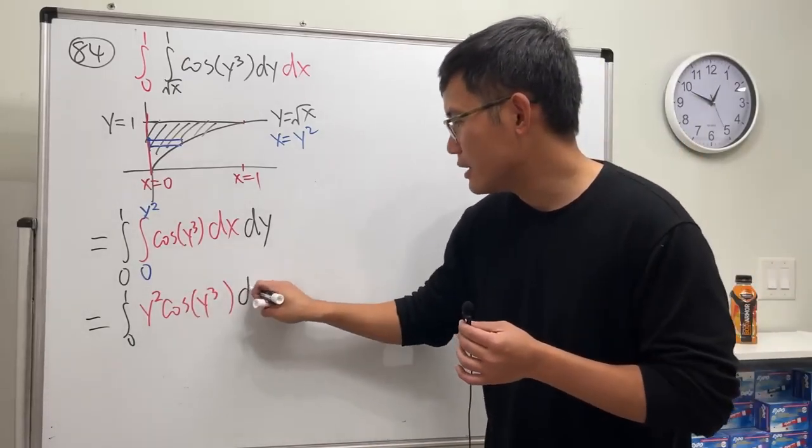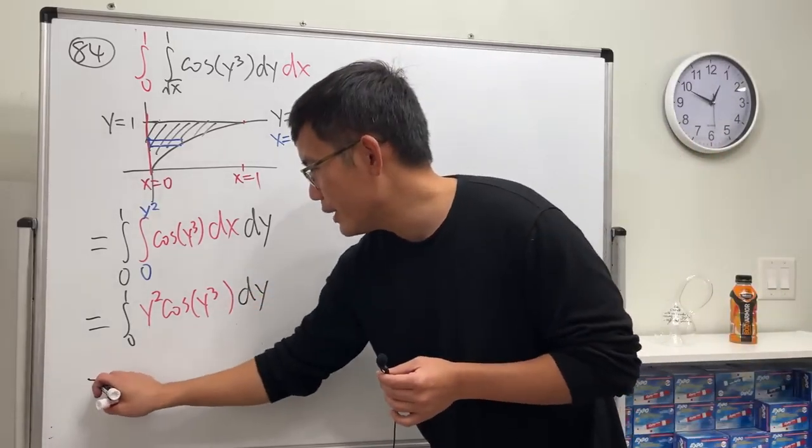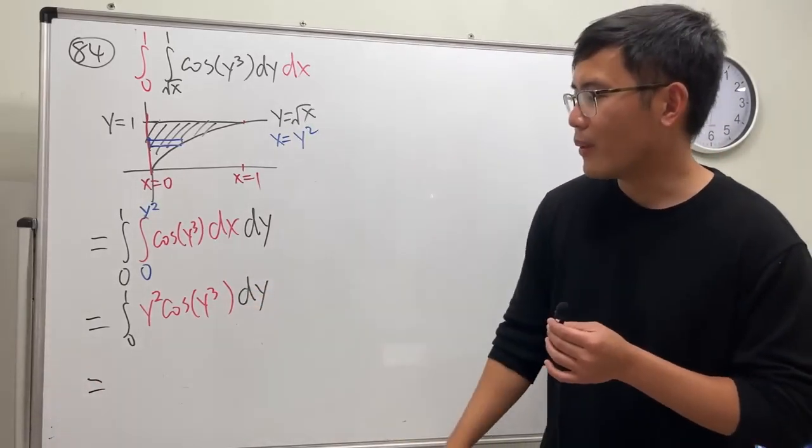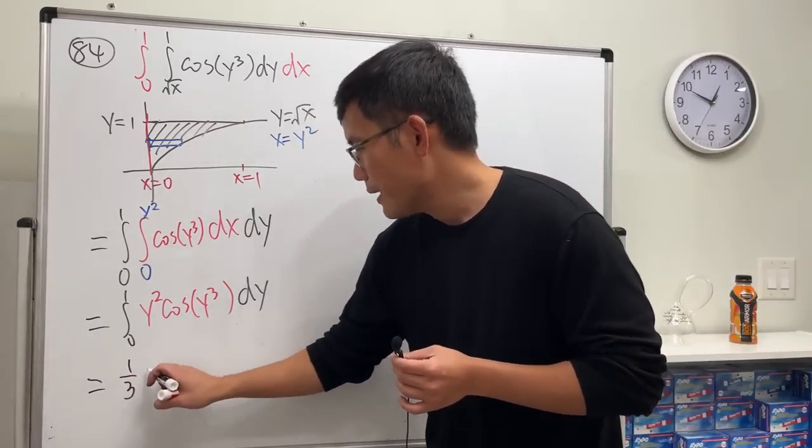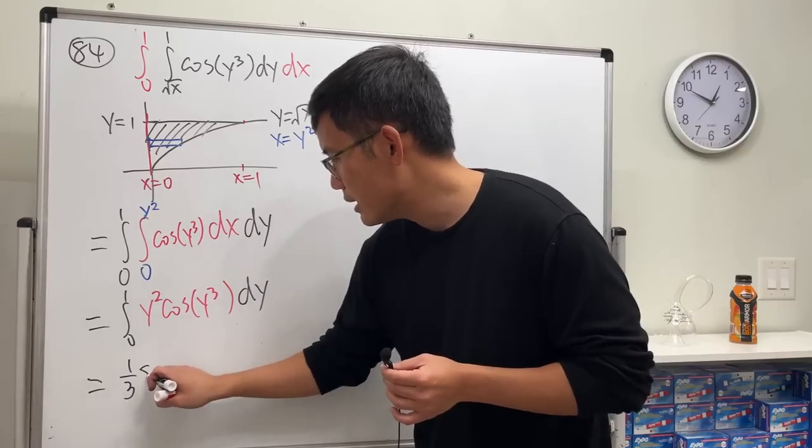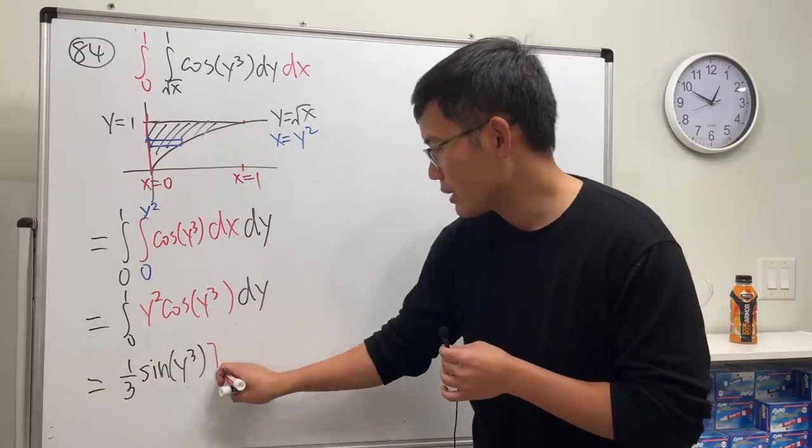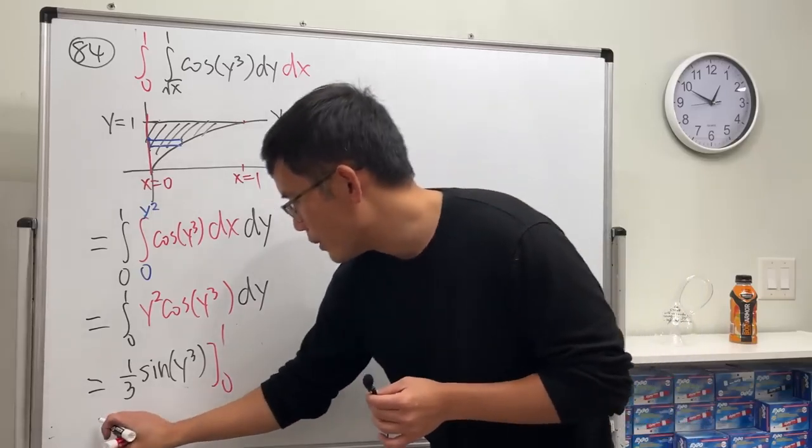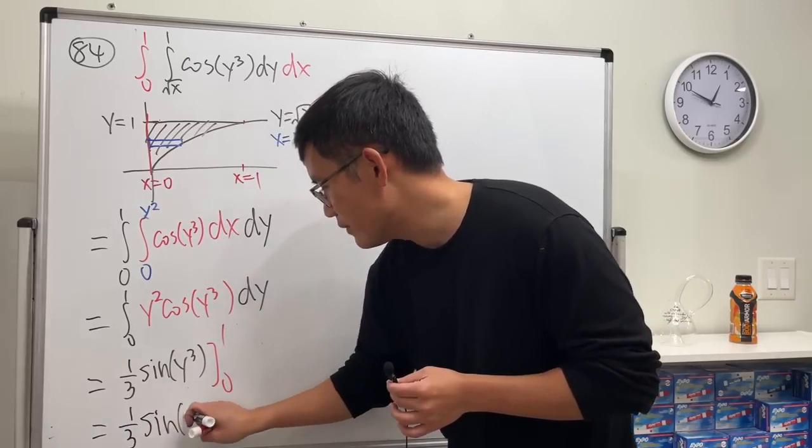That's nice, and then we have the dy here. Now for this, let's just do a u-sub. Then u equals y to the third power, so we need a one third here for the result of integration. And then the integral of this is sine, and then we have y to the third power. And then we plug in zero to one. So ladies and gentlemen, one third sine of one.